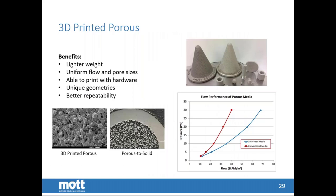One of the things we've developed here at Mott is a way to make porous metal by the 3D printing method. 3D printing is a very active technology these days, so we have taken our expertise in porous metal manufacturing and are applying 3D printing methods. The main advantage of 3D printing is it's not limited to geometries — you can print very unique shapes which are not achievable with conventional pressing methods. Also, instead of having to weld or press fit or otherwise add hardware to porous, you can actually print the solid material directly to the porous metal, which removes processing and purchase of hardware.